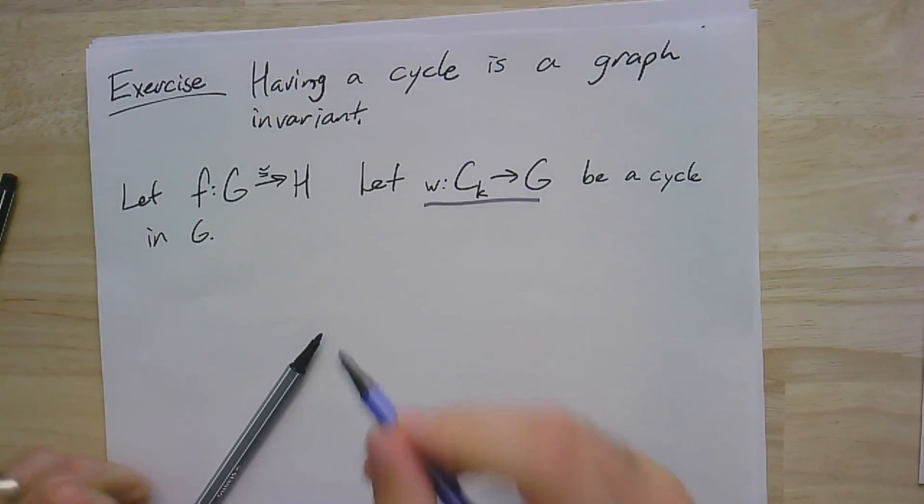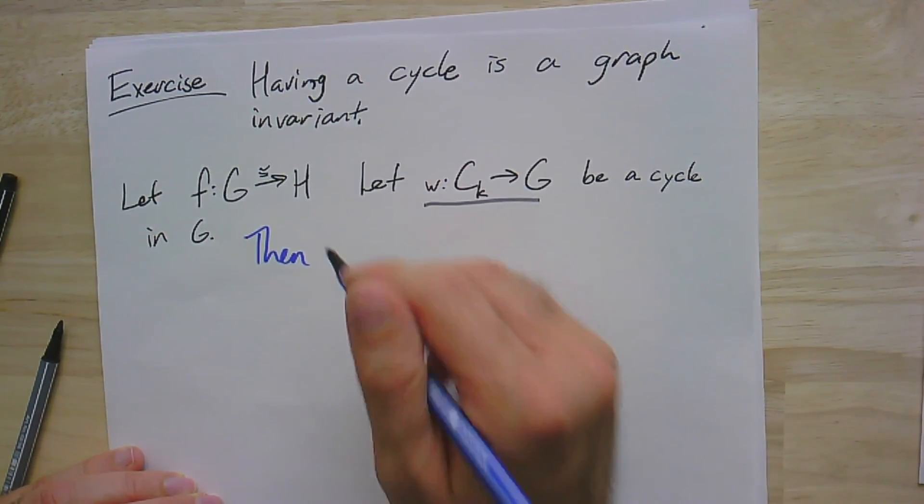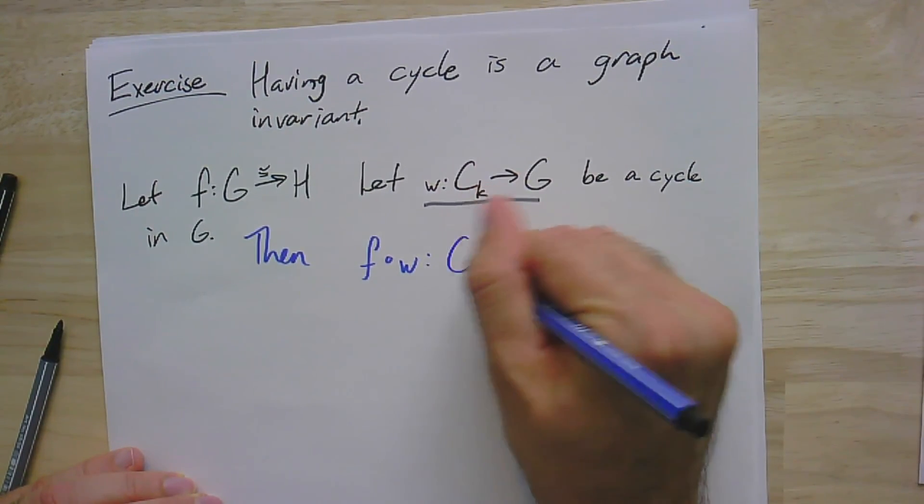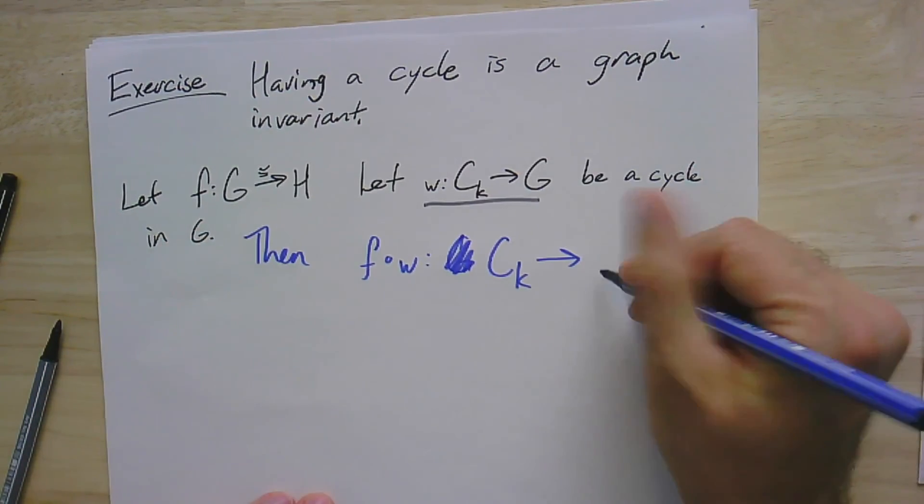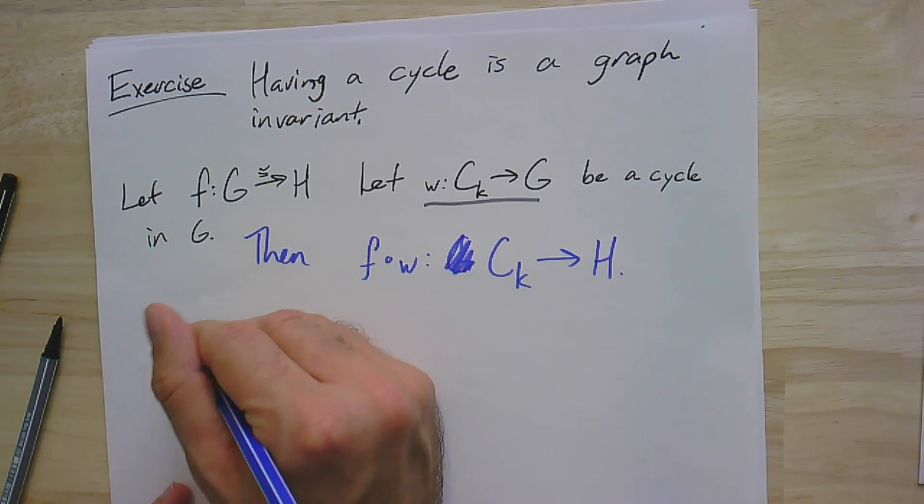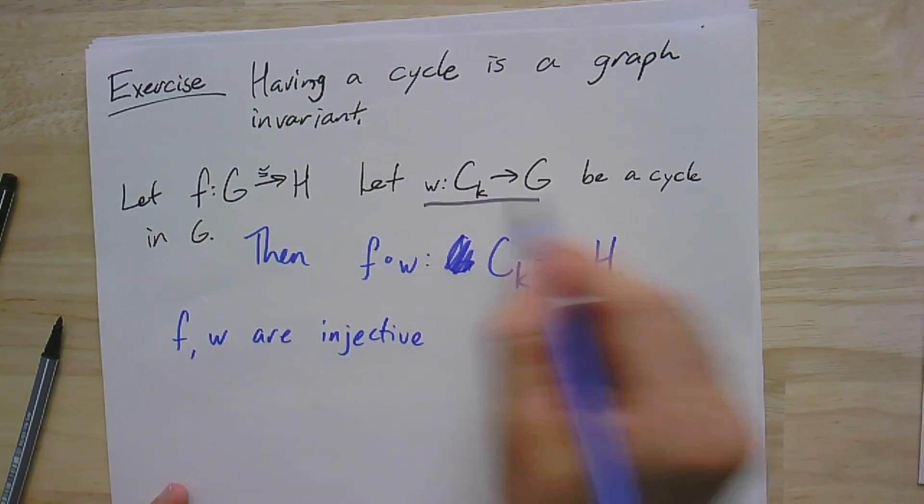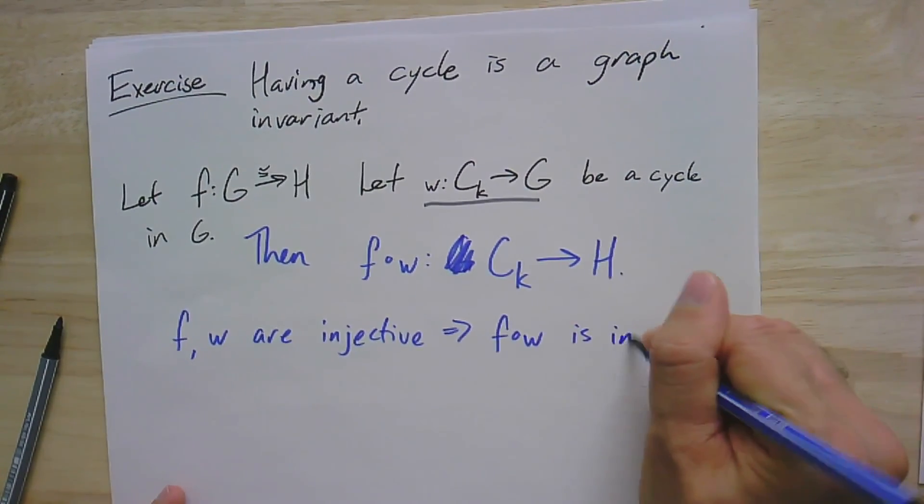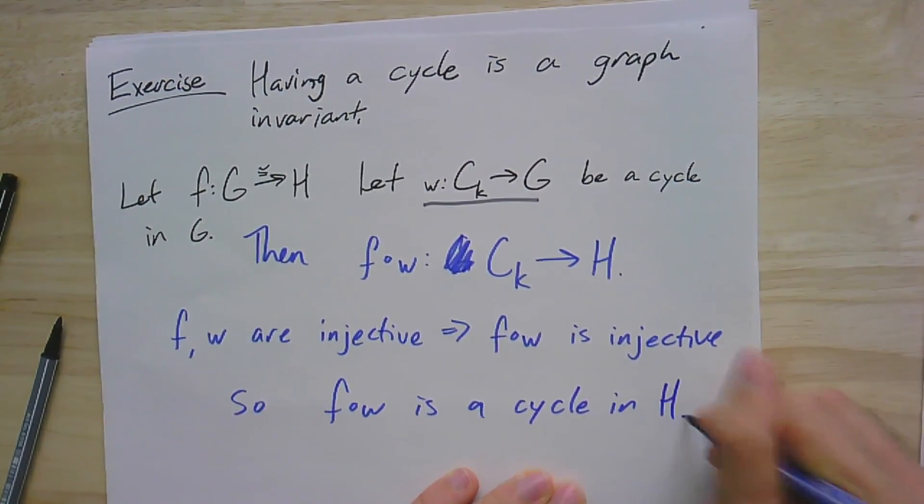And so this gives us a chance to use this same trick again and again, which is we can find a cycle in H just by composing these two. So F composed with W is a homomorphism CK. First W maps CK to G and then F maps G to H. So this goes CK to H. And F and W are injective because this is a cycle. So this has to be injective. And the composition of these injective homomorphisms is also injective. So F composed W is a cycle in H.